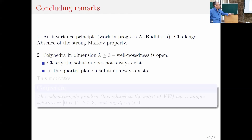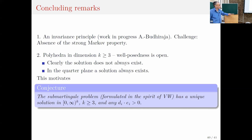The other remark is more ambitious. In dimension three and higher, the well-posedness of RBM — or the sub-martingale problem — is open. Solutions do not always exist, as we know from dimension two. On the other hand, the quarter plane in dimension two is a borderline case where solutions always exist. This motivates the conjecture that at least for the positive orthant in higher dimensions, as long as the directions point inward, the sub-martingale problem will be well-posed — but this is open.